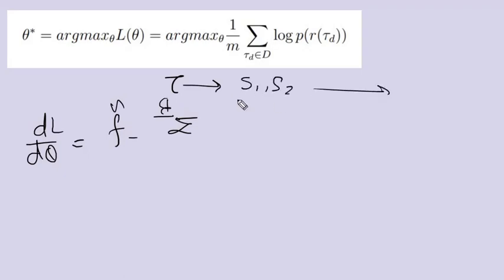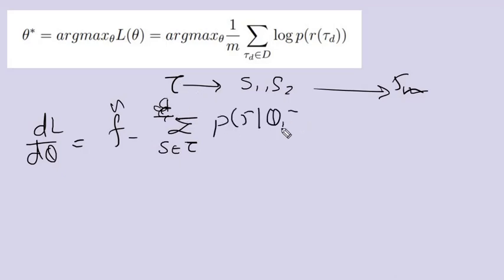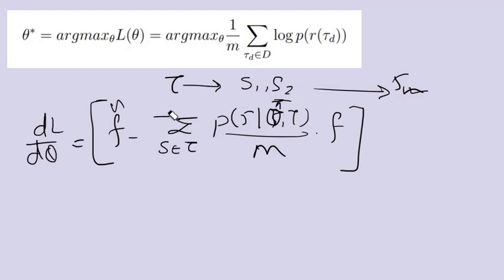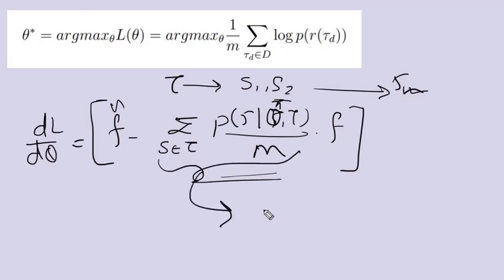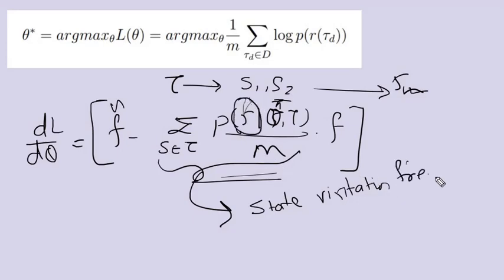We substitute the trajectory as a sequence of states s1, s2 given the actions that take us to each state. We can then sum over all trajectories and substitute with all the states belonging to each trajectory, writing the probability of getting to those states given the transition matrix, divided by m, times the features. This expression can be recognized as the state visitation frequency — the frequency with which the policy visits each particular state.